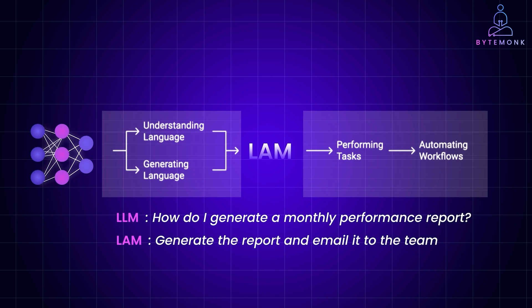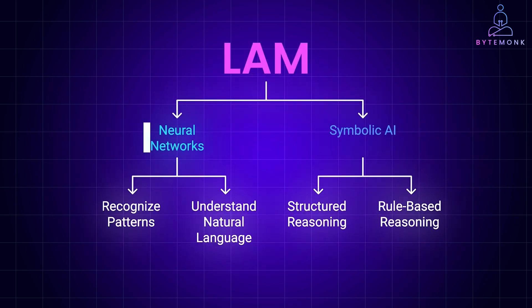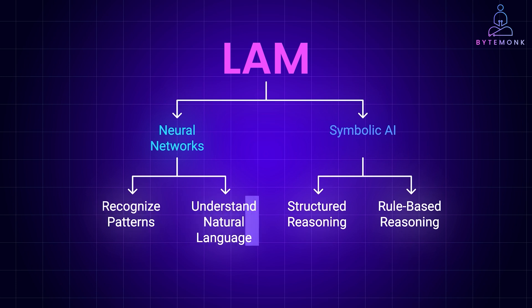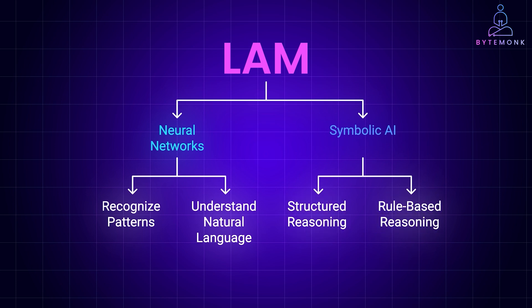LAMs aren't powered solely by neural networks. They combine neural networks with symbolic AI to enhance their reasoning capabilities. Neural networks help LAMs recognize patterns and understand natural language instructions, whereas symbolic AI adds a layer of structured, rule-based reasoning, helping LAMs make sense of tasks in a logical, step-by-step way. Neurosymbolic AI is the secret sauce that allows them to turn instructions into meaningful actions, making them highly effective at complex, real-world automation.